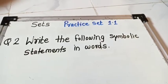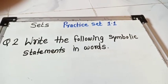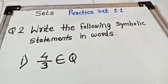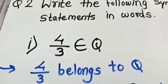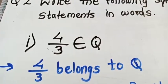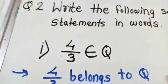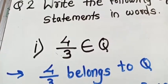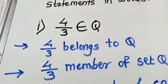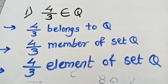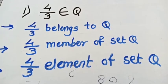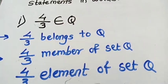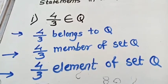Next question: write the following symbolic statements in words. First symbolic statement: 4/3 ∈ Q. In word form: '4/3 belongs to Q.' This sign means 'belongs to' or 'is an element of' or 'is a member of' set Q. You can write: '4/3 is a member of set Q' or '4/3 is an element of set Q.' All three answers are the same.